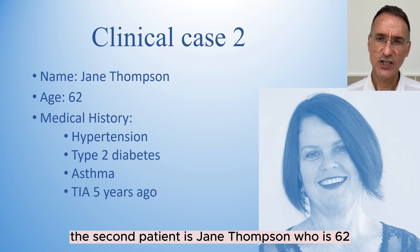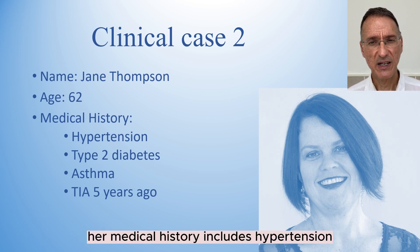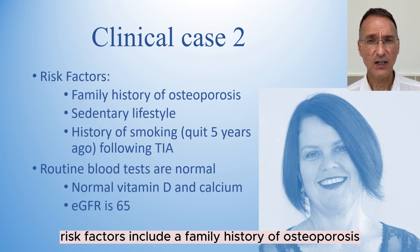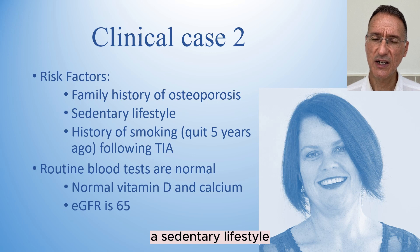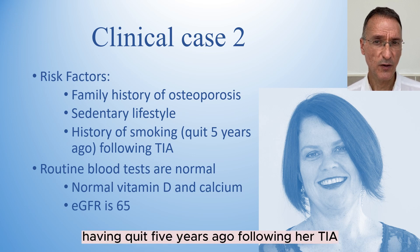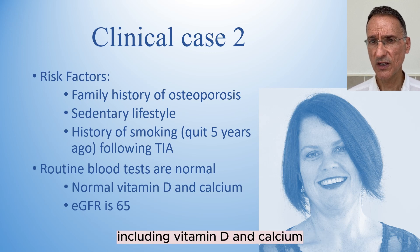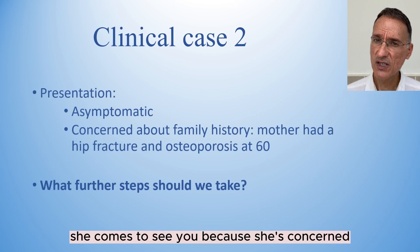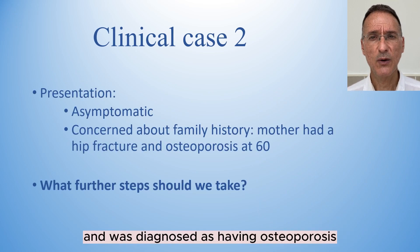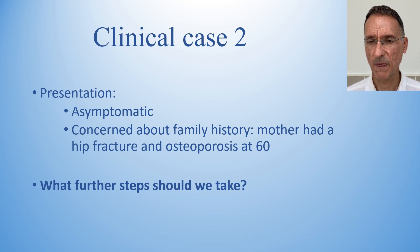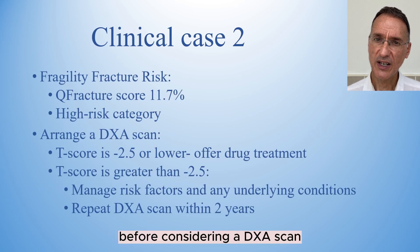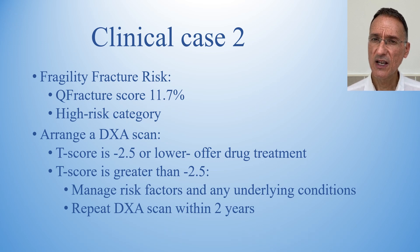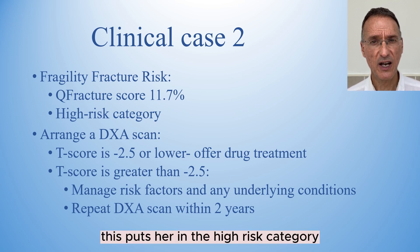The second patient is Jane Thompson, who is 62. Her medical history includes hypertension, type 2 diabetes, asthma, and a TIA five years ago. Risk factors include a family history of osteoporosis, a sedentary lifestyle, and a history of smoking, having quit five years ago following her TIA. Routine blood tests are normal including vitamin D and calcium, her eGFR is 65, and she is otherwise asymptomatic. She comes to see you because her mother had a hip fracture and was diagnosed with osteoporosis. Before considering a DEXA scan, we should calculate Jane's fragility fracture risk. Based on her risk factors, the Q-Fracture score is 11.7%, putting her in the high risk category.